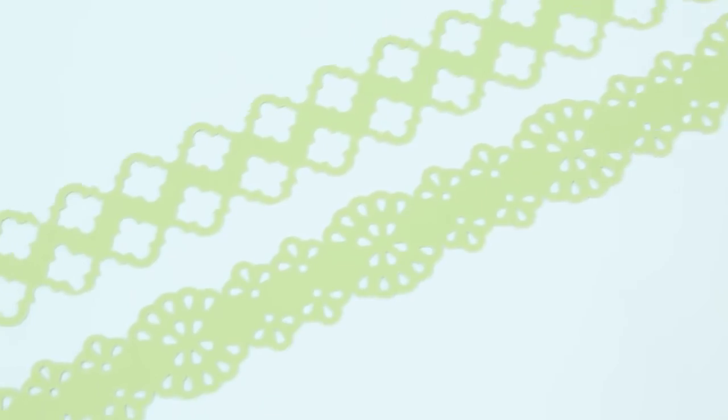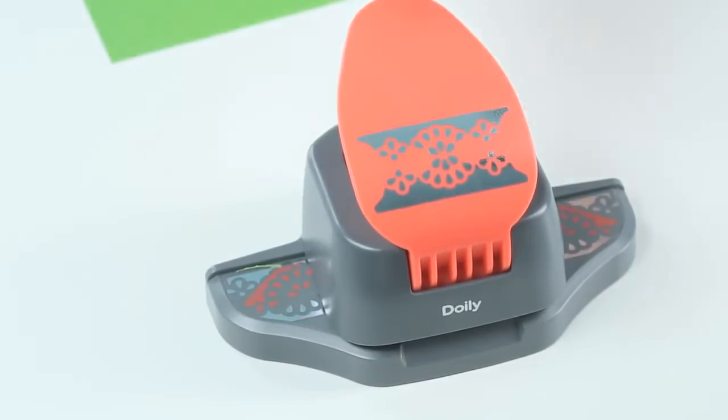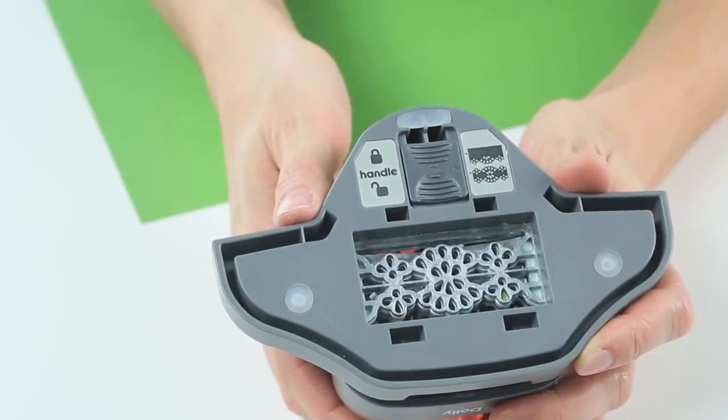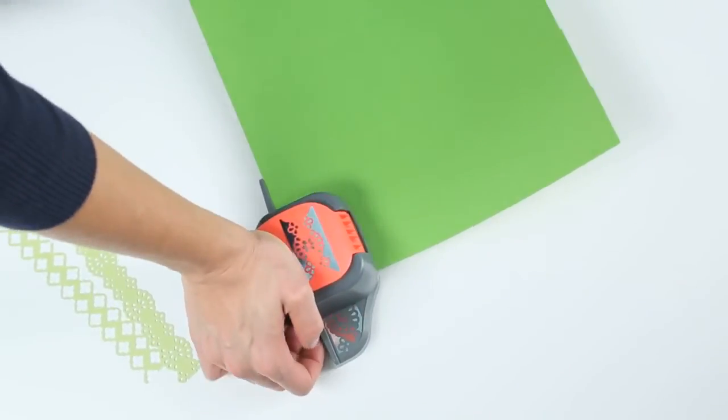To create a border strip, slide the button on the bottom of the tool to point to the border design. Feed your paper into the punch and start punching.